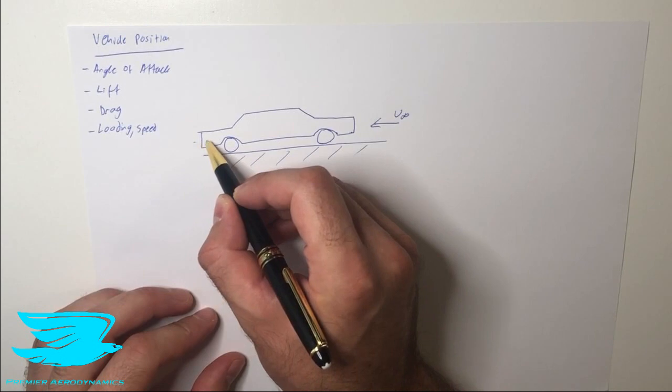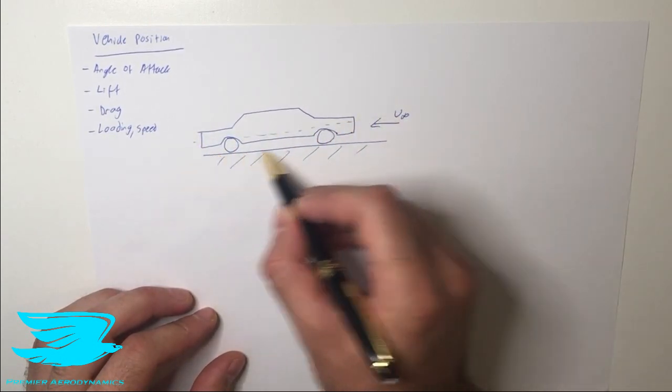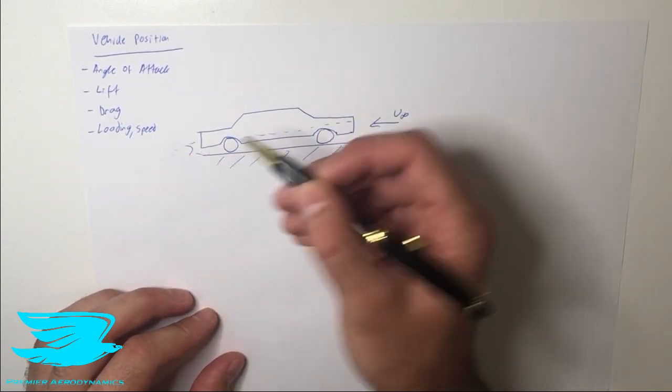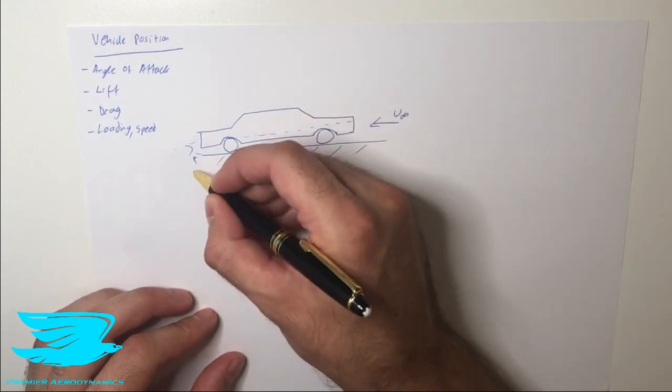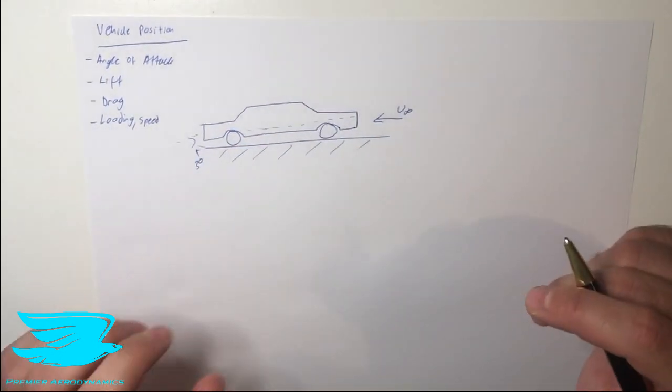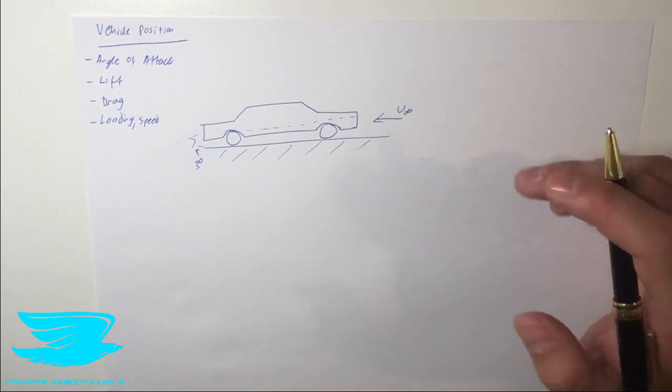So if we were to draw a center line through the car and we have the road here, when they meet effectively we have this angle here which could be let's say three degrees for this particular situation.